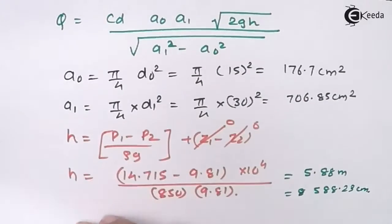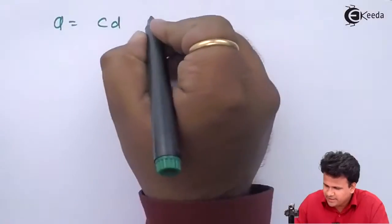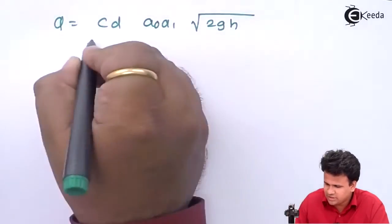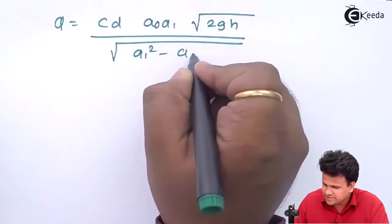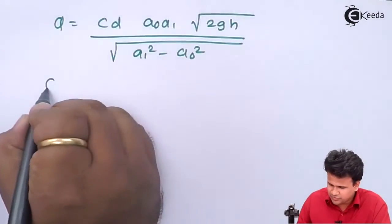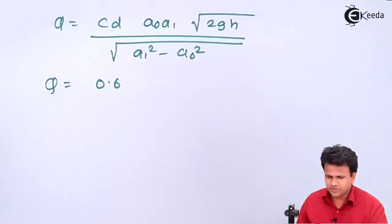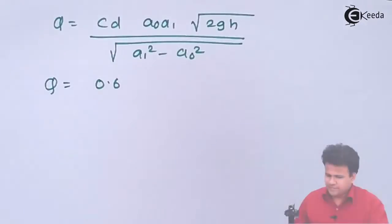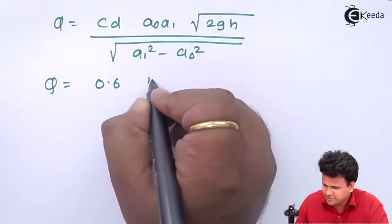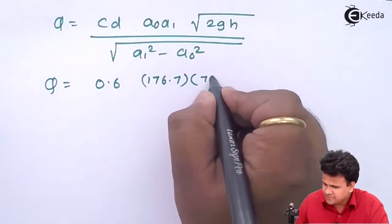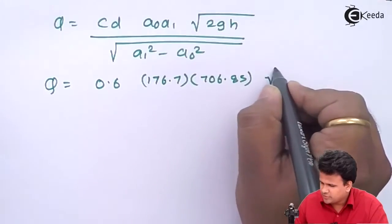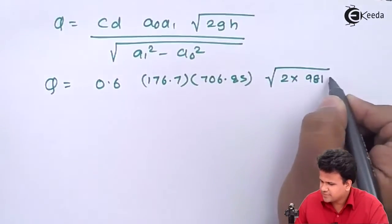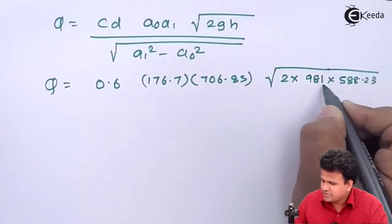We will solve entirely in centimeters to get discharge in cm³/s. Substituting: Q = 0.6 × 176.7 × 706.85 × √(2 × 981 × 588.23) / √(706.85² − 176.7²). Note that g is converted to 981 cm/s² and h to 588.23 cm.